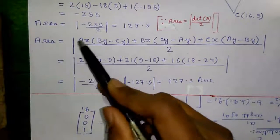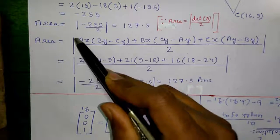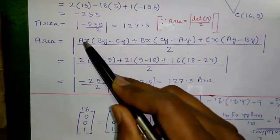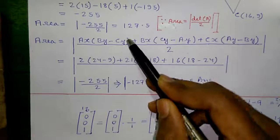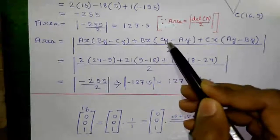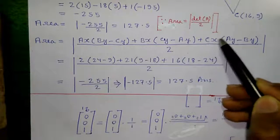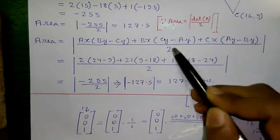You can find area using this formula also, which is absolute of A x into B y minus C y plus B x into C y minus A y plus C x into A y minus B y divided by 2.